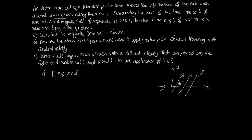To calculate the force on the electron we use F = QV × B. We're told V = 8 × 10⁶ m/s and B = 0.025 teslas. The electron has a charge of 1.602 × 10⁻¹⁹ coulombs. The angle between the velocity and the magnetic field is 60 degrees, so for the cross product we multiply by sin 60. Calculating this gives 2.8 × 10⁻¹⁴ newtons.